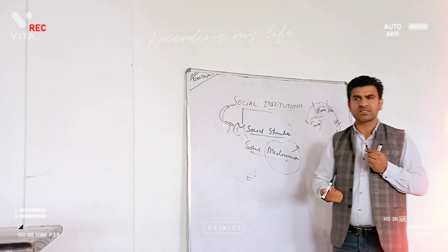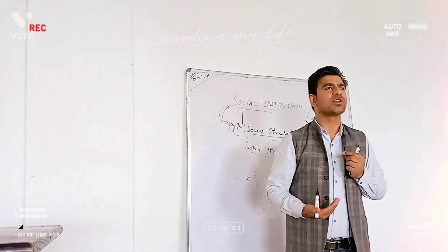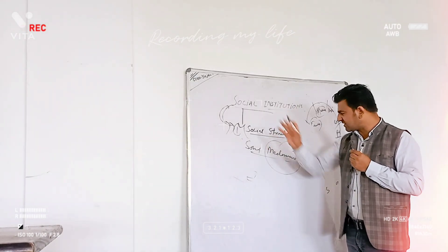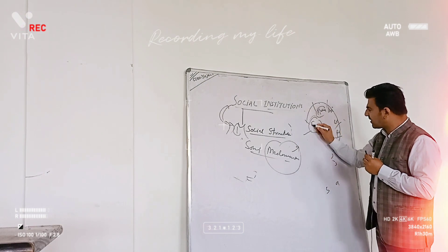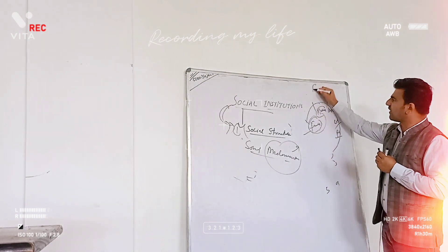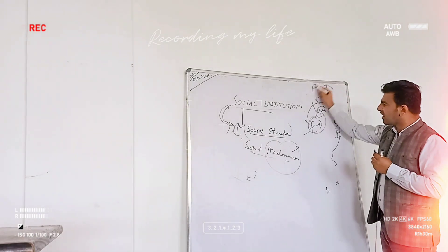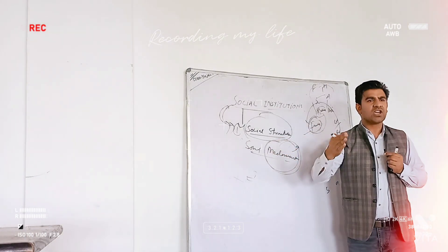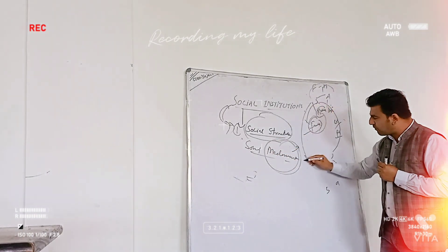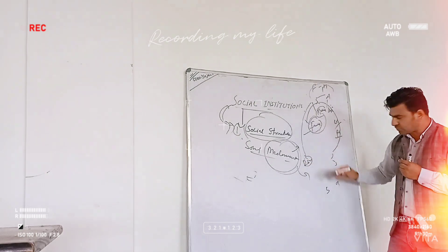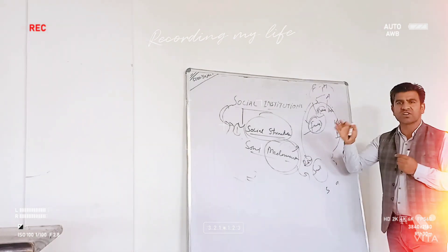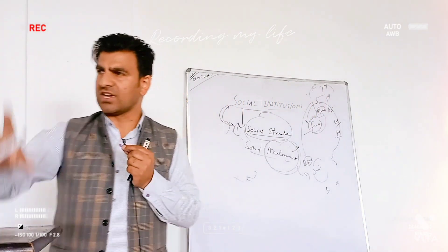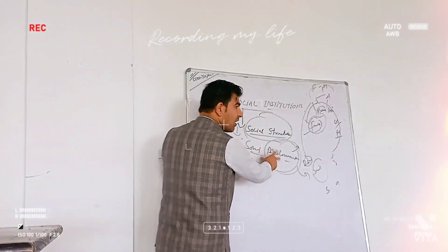A mechanism is such an aspect through which you are doing something or performing some work. For example, family is a social institution — it has a structure with father, mother, son, and daughter. From the perspective of social mechanism, the family has the role of socializing the members of the family. So, a social institution is number one a social structure, and number two a social mechanism.